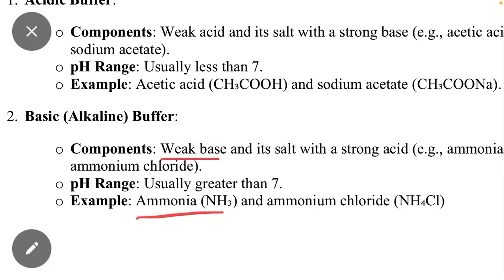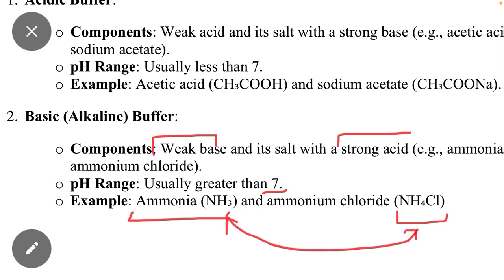When we react ammonia with HCl, ammonium chloride (NH4Cl) is formed, which is the salt of a weak base with a strong acid. The pH is usually greater than 7. When ammonia and its salt with strong acid (ammonium chloride) are added together, a buffer is formed that is basic or alkaline in nature.